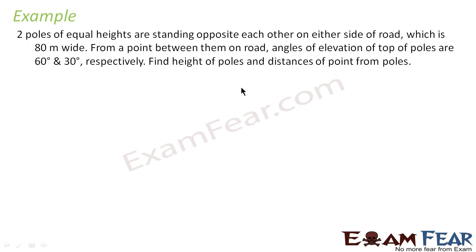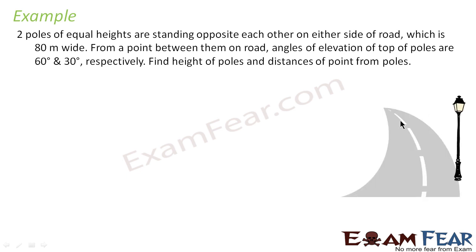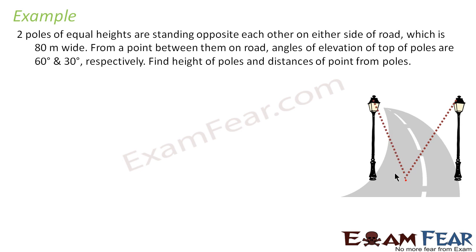Let's take one more example. Two poles of equal height are standing opposite to each other on either side of a road which is 80 meters wide. From a point between them on the road, the angles of elevation of the tops of the poles are 60 and 30 degrees respectively. Find the height of the poles and the distance of the point from the poles.